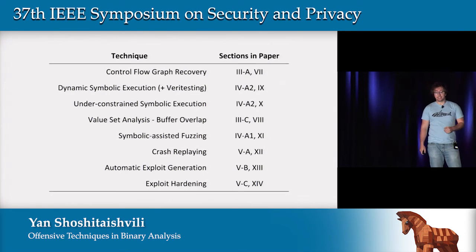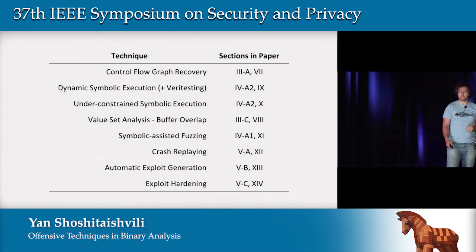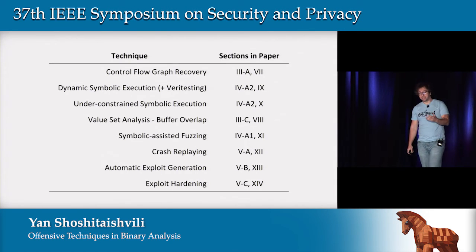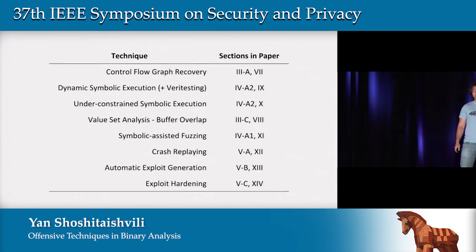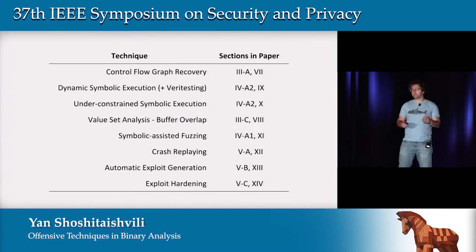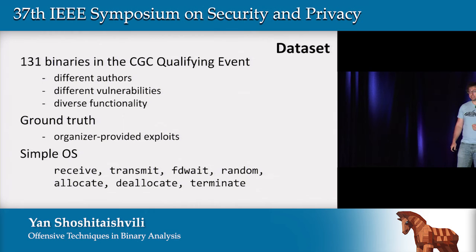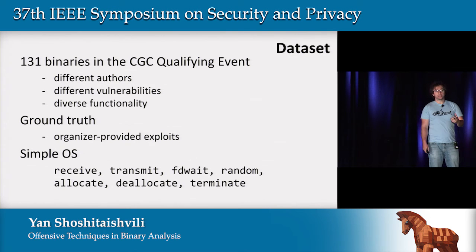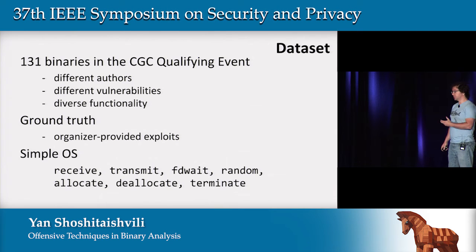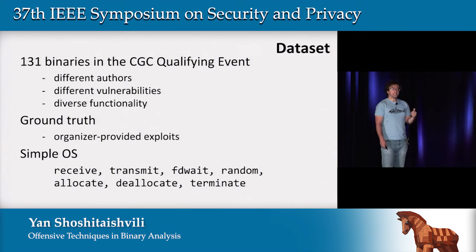We implemented a lot of static analyses including value set analysis, and tested how well it interacts with fuzzing. We looked into symbolically assisted fuzzing, crash replaying, and a lot of this sort of stuff. We invite you to read in the paper how we designed and implemented this on a common base in angr. We evaluated all of these analyses and compared how they fare against each other. Our dataset was 131 binaries that DARPA released as the qualification event for the Cyber Grand Challenge.